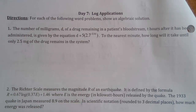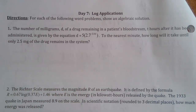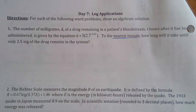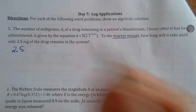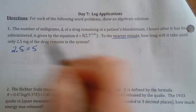The number of milligrams D of a drug remaining in a patient's bloodstream T hours after it has been administered is given by the following equation. To the nearest minute, how long will it take until only 2.5 milligrams of the drug remains? Since T is in hours, when we solve for T, keep in mind that if we want the nearest minute we'll have to convert at the end. We set the equation equal to 2.5 and solve for T.